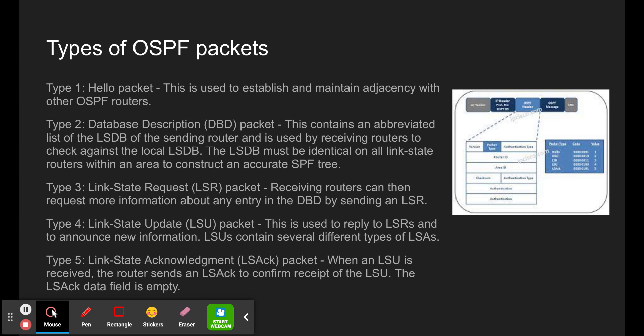Types of OSPF packets: link state packets are the tools used by OSPF to determine the fastest available route for a packet. OSPF uses the following link state packets to establish and maintain neighbor adjacencies and exchange routing updates. Type 1 is the Hello packet, used to establish and maintain adjacency with other OSPF routers. Type 2 is the Database Description (DBD) packet, which contains an abbreviated list of the LSDB of the sending router, used by receiving routers to check against their local LSDB. The LSDB must be identical on all link state routers within an area to construct an accurate SPF tree.